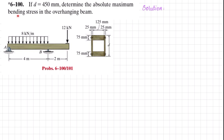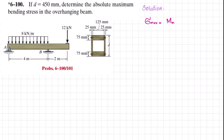We have to find the maximum bending stress in the beam. We know that maximum bending stress is equal to maximum bending moment times c divided by I. So what we will do is find the maximum bending moment, and for that we have to draw the shear force and bending moment diagram.